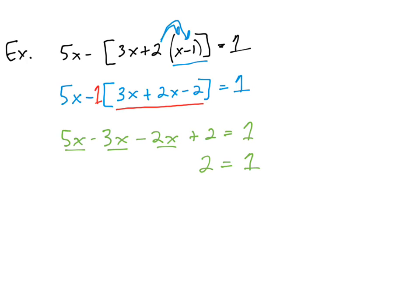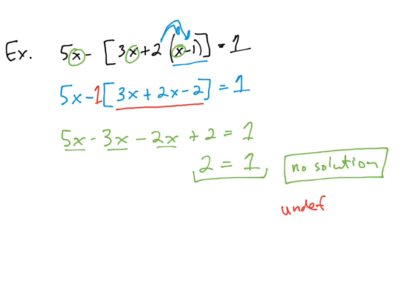When we get something like this, 2 is obviously not equal to 1, so we say there is no solution. This means there is no value we could input for x that will make the left-hand side equal the right-hand side. We don't want to say 'undefined' here — undefined is reserved for division by zero or taking the square root of a negative. Precisely, we say 'no solution' because this equation cannot be solved.